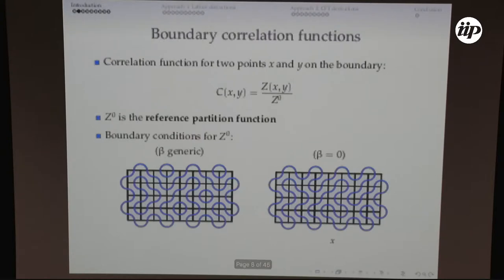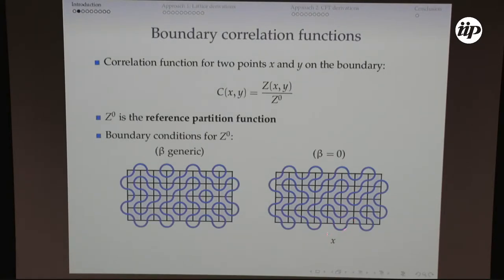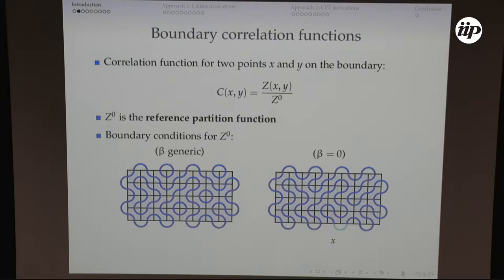Here's why the reference partition function is independent of x. Going back to the case where instead of two defects I have an arc, the natural choice for the reference partition function is to consider all configurations where I have a unique loop. This can be achieved in two ways. The first is to compute the partition function for generic values of beta — it's a polynomial in beta — then divide by beta and take the limit beta to zero. A more convenient way is to choose one special arc and say configurations have weight zero except the one that crosses this arc, which has weight one. Cutting this arc in half gives two defects with weight one, and it's independent of x.